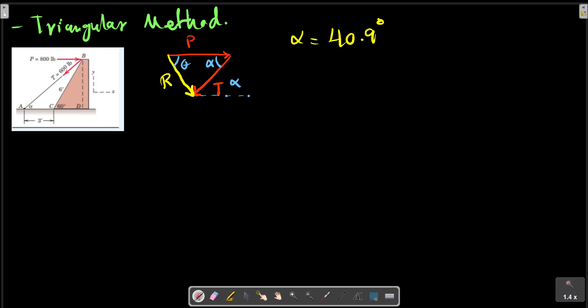For the triangular law, if we know the angle between two vectors in connection with head and tail, the resultant is R² = P² + T² - 2PT cos alpha.